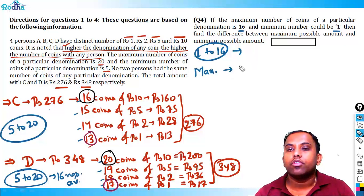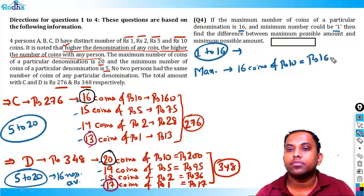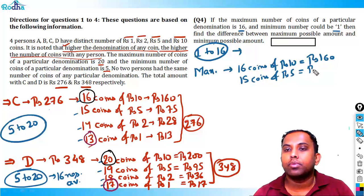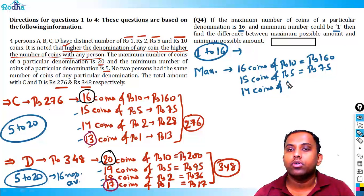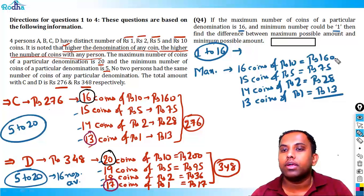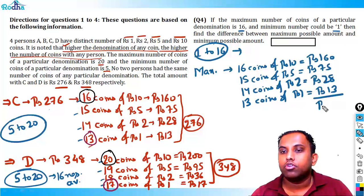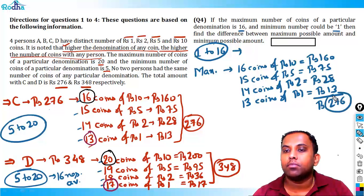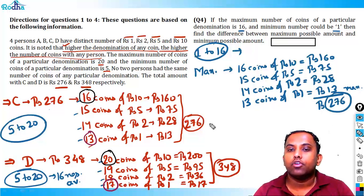For maximum amount, start from 16: 16 coins of rupees 10 (rupees 160), 15 coins of rupees 5 (rupees 75), 14 coins of rupees 2 (rupees 28), and 13 coins of rupees 1 (rupees 13). Sum: 160 + 75 = 235 + 28 = 263 + 13 = 276. Maximum possible amount is rupees 276.